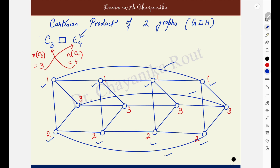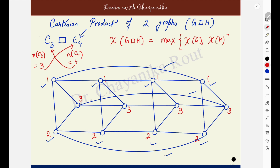That is how we create the Cartesian product. In this regard, let me mention a formula regarding the chromatic number. The chromatic number of the Cartesian product of 2 graphs is equal to the maximum of the chromatic numbers of the individual graphs. So to find the chromatic number of the Cartesian product, you individually find the chromatic numbers of the 2 graphs, and the maximum of those 2 values gives you the chromatic number of the Cartesian product.